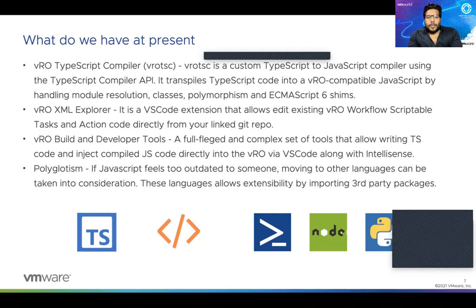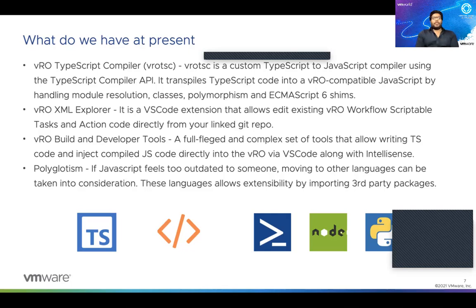The fourth option is polyglottism. Simply, if you are feeling the limitations of JavaScript in your VRO editor, just move it out — move on to some other language. You can move to Python, Node.js, or PowerShell and write the code there. These languages also allow extensibility because we can import third-party packages. However, all these options — and probably there are other tools I'm not aware of — they just don't solve the core problem.